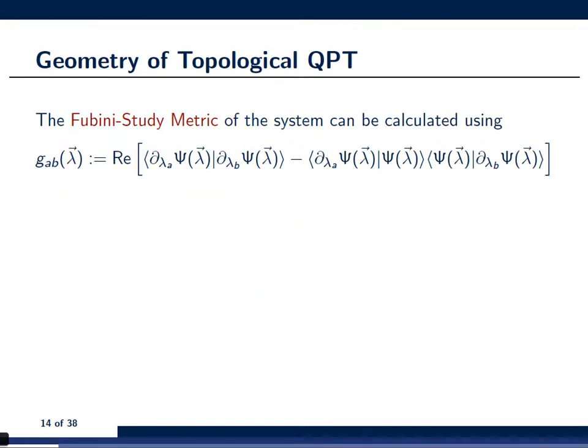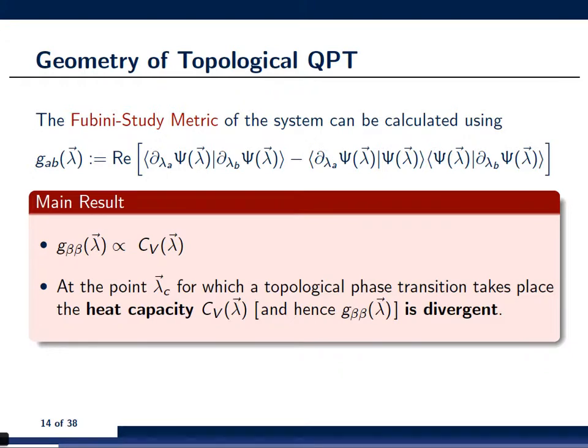Now, we have this explicit form of the ground state and we can use this form to calculate the Fubini-study metric of our system, and there are two main results that we find. The first result is that the 0,0 component corresponds in fact to the heat capacity, that is to say some local observable of the corresponding classical model. The second interesting aspect that we observe is that at the points where the topological phase transition takes place this local quantity, the heat capacity of the classical model, is in fact divergent and as a consequence, of course also the Fubini-study metric tensor is divergent.